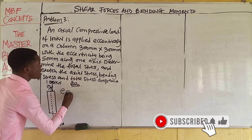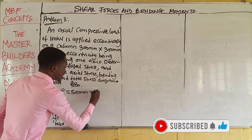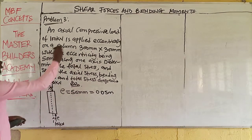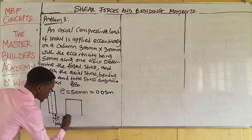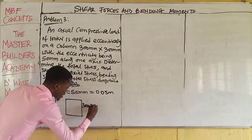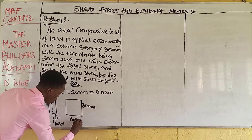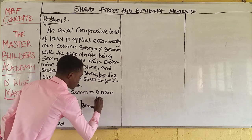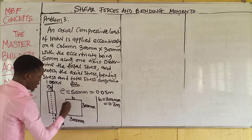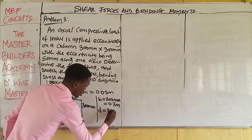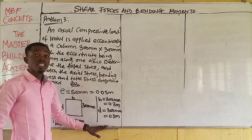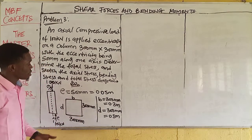What is the eccentricity? Eccentricity here is given as 50 millimeters, which is equal to 0.05 meters — all you do is divide by 1,000. The column size is 300 mm by 300 mm, so B equals 300 mm, which is 0.3 meters, and the depth D is also 300 mm, which is 0.3 meters. We have converted all values from millimeters to meters.